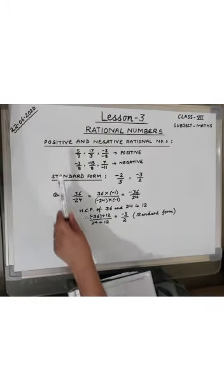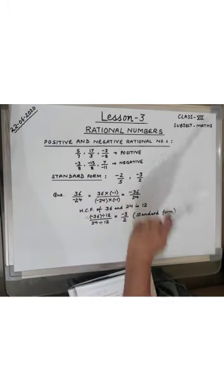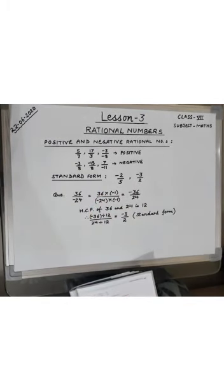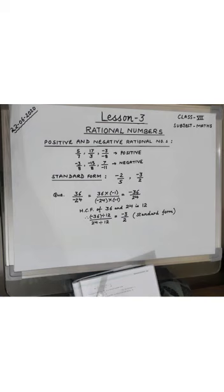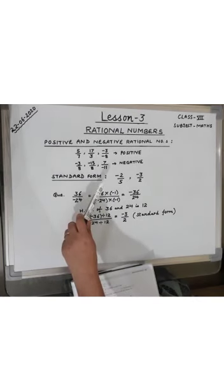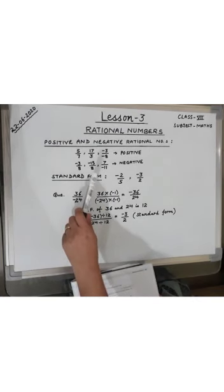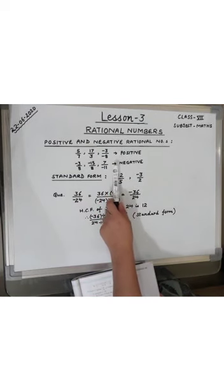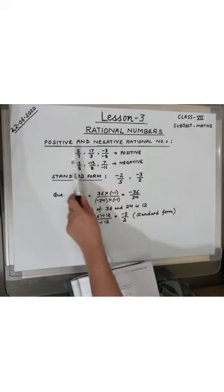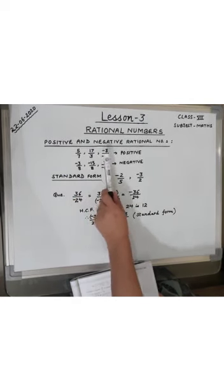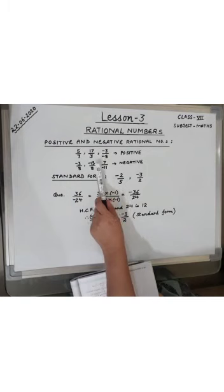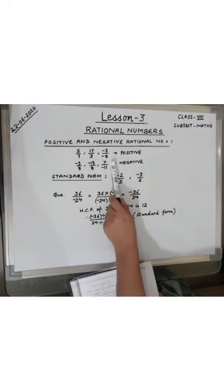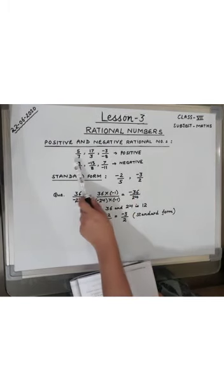Now, positive and negative rational numbers. A rational number is called a positive rational number if its numerator and denominator are either both positive integers or both negative integers. For example, 5 upon 7, 17 upon 3, and minus 3 upon minus 8 are all positive rational numbers.